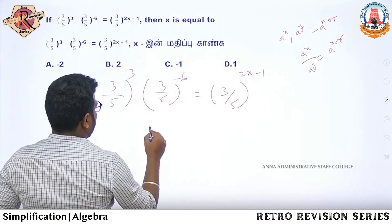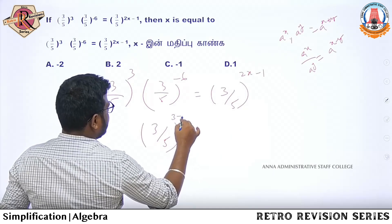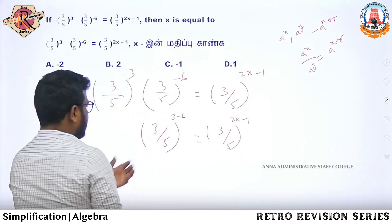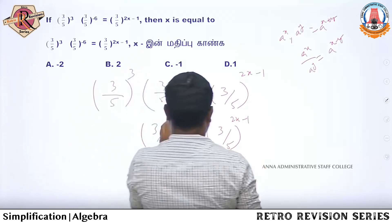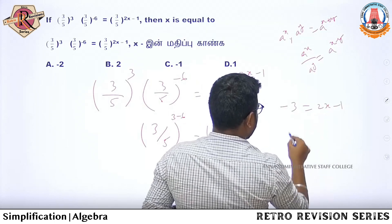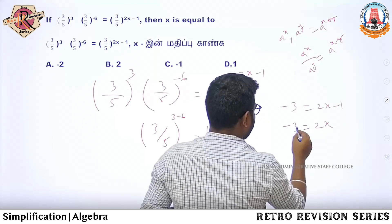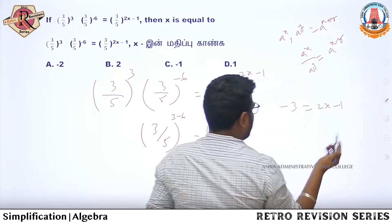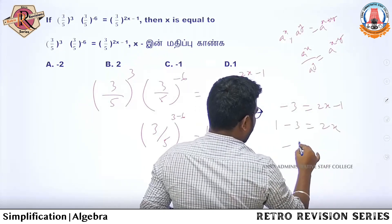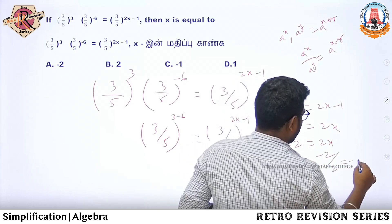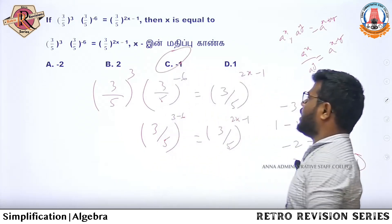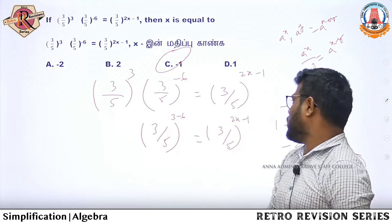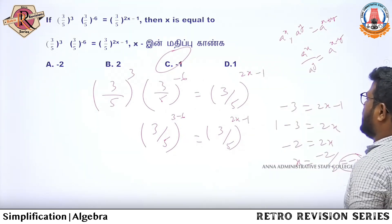So multiplication gives a power x. We have 3 power 5 times 3 power (negative 6). Here we write 3 power 5 equals 3 power (2x minus 1). Now base is equal, so powers are equal: 5 minus 6 equals 2x minus 1, so minus 1 equals 2x, x equals minus 2 by 2, which is minus 1. So option C. Question number 3 answer is option C, x = -1.